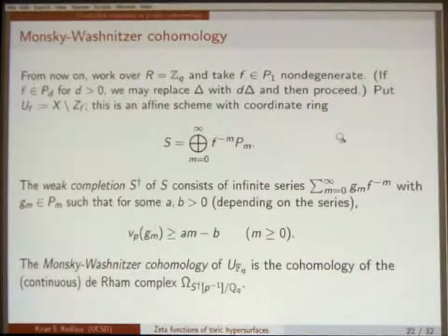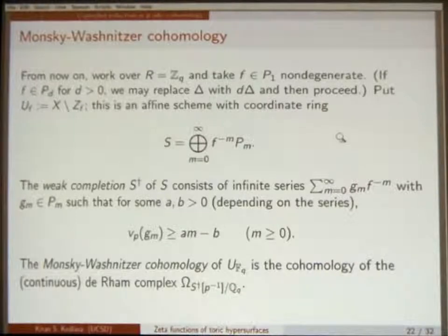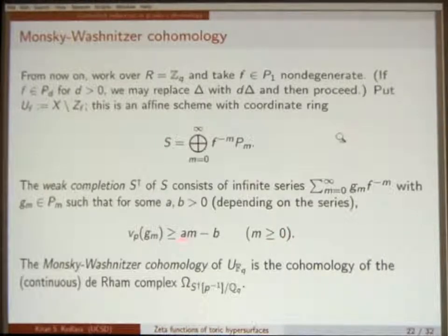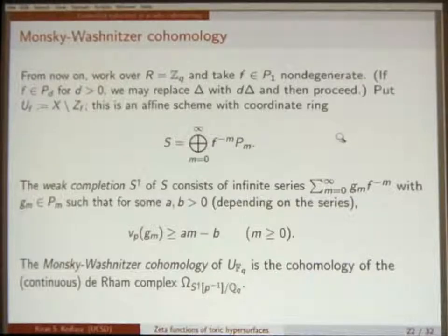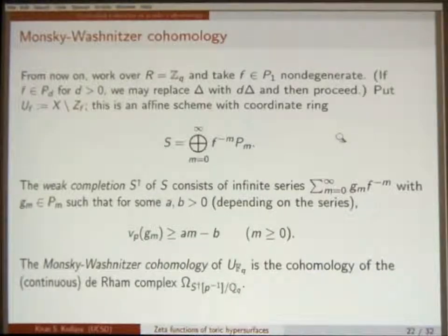The weak completion of this ring consists of infinite series ∑ G_m · f^{-m} where G_m is in P^m, such that the p-adic valuation of G_m grows linearly with m. This is a construction from the Monsky-Washnitzer papers. The true p-adic completion would only require that this valuation goes to infinity with m — potentially very slowly — but here I put a growth condition on the p-adic valuations. This is useful because it gives you the right de Rham cohomology.